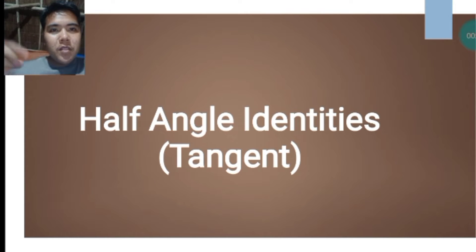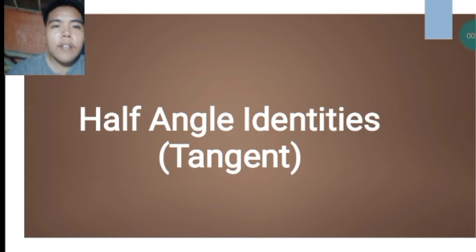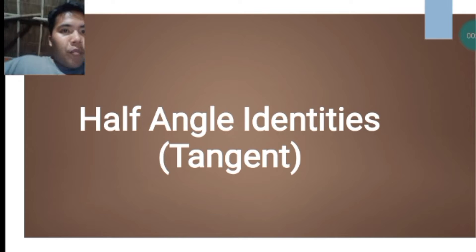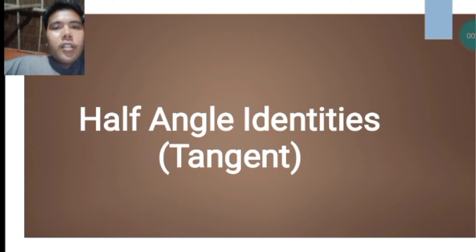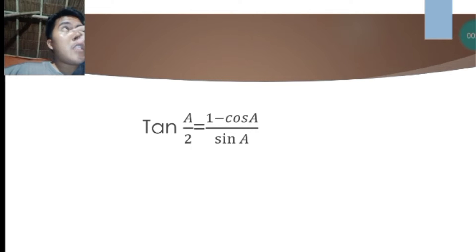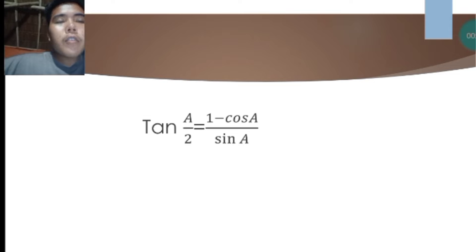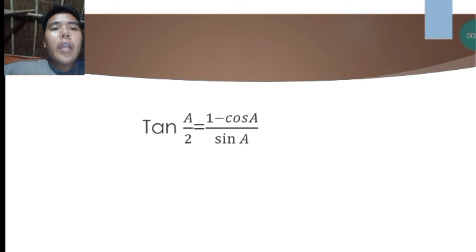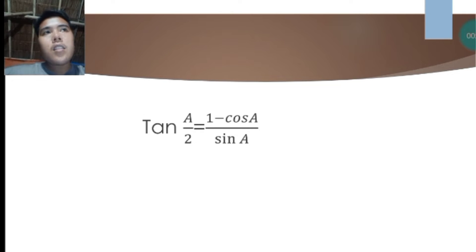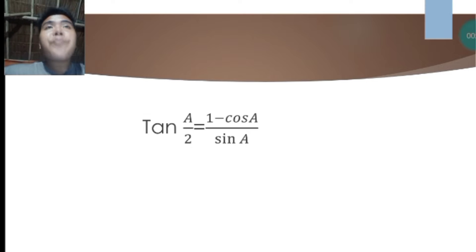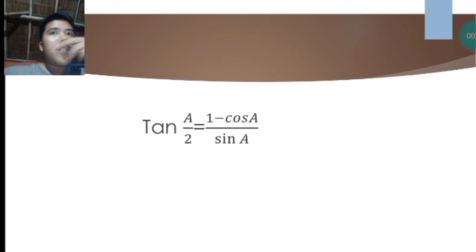Good day everyone. For today's video we're going to talk about half-angle identities, specifically tangent. In finding the half-angle identity of a tangent, we're going to use the formula: tan(a/2) — you can replace 'a' with theta or any variable — equals 1 minus cosine a, all over sine a. If your teacher asks you to find the half-angle identity of a tangent, you use this formula.